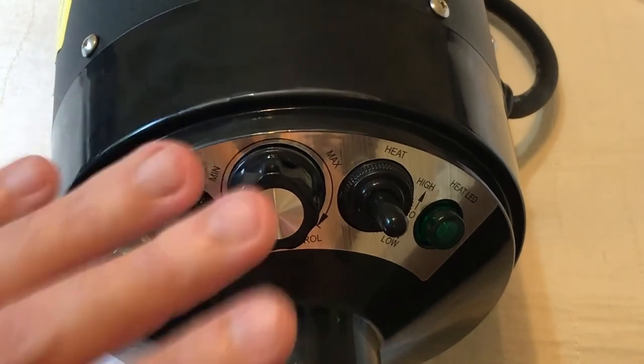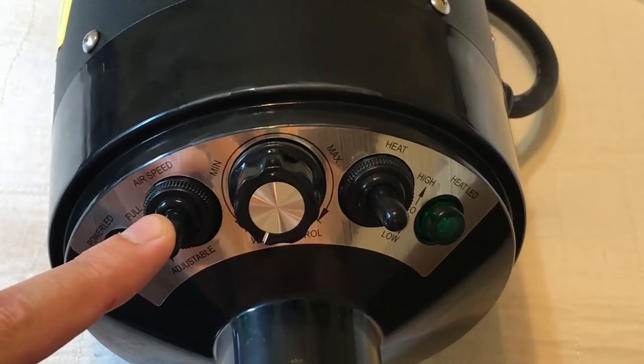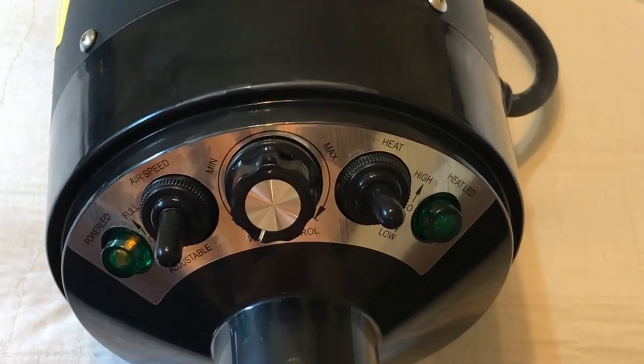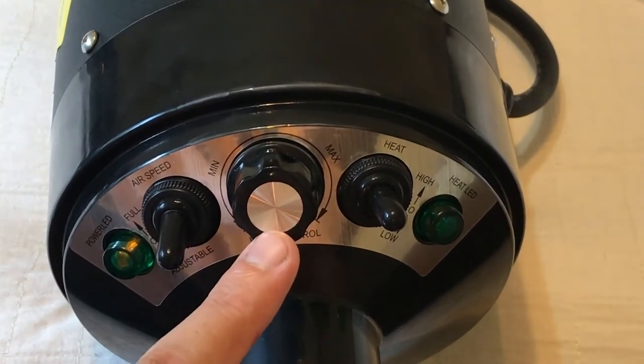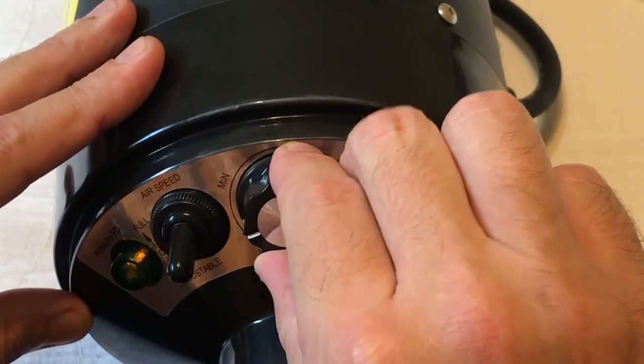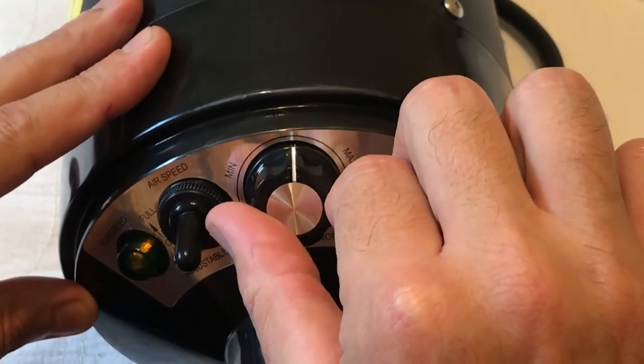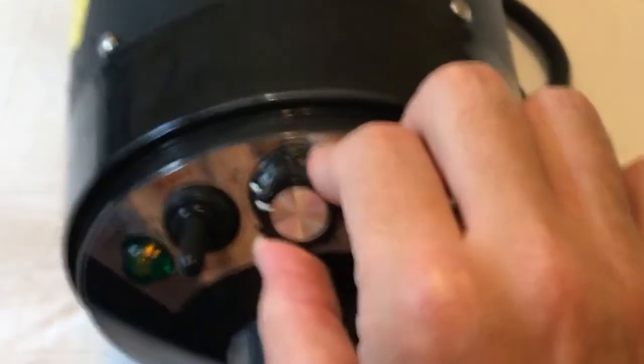However, if you decide to use the low airspeed, you can then use the wind control knob here in the middle to adjust the speed. And you'll notice as I'm turning it, it's getting stronger and stronger.